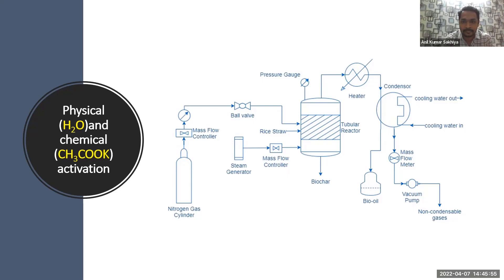This is our experimental setup — a batch reactor with a capacity of five kg of feedstock, an average particle size of two to four mm, and a bulk density of 75 kg/m³.